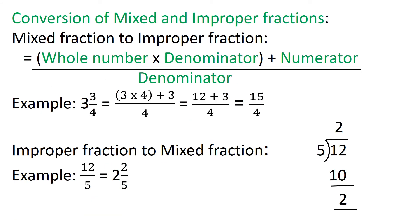Let us revise the conversion of mixed and improper fractions. First, let us convert a mixed fraction to an improper fraction: whole number into denominator plus the numerator, upon the denominator. Example: convert 3 and 3 upon 4 to an improper fraction. Whole number 3 into denominator 4, plus numerator 3, upon denominator 4 — equals 12 plus 3 upon 4, which is 15 upon 4. So 3 and 3 upon 4 converted to an improper fraction is 15 upon 4.